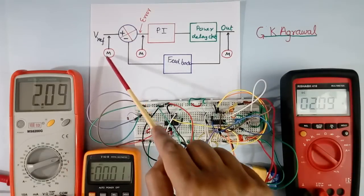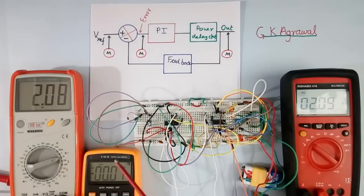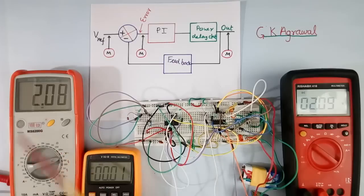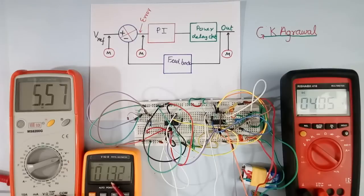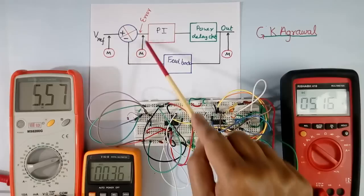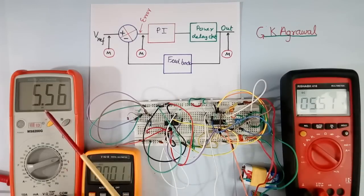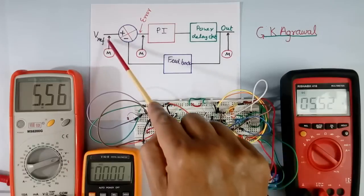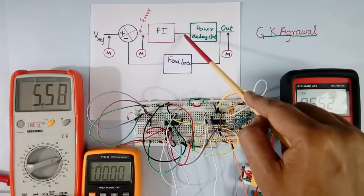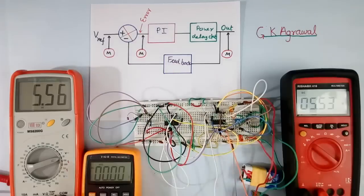Now again I will show — I will increase this voltage. If I increase this voltage, error will come. Because of error, this voltage will start increasing until both become equal. See here error came — plus. Because of error, voltage is increasing, this output is increasing, this error is reducing because of feedback. Control is working. Now you see this voltage has become approximately equal to this voltage, the error has become 0, PI controller is steady, PI controller output is steady.